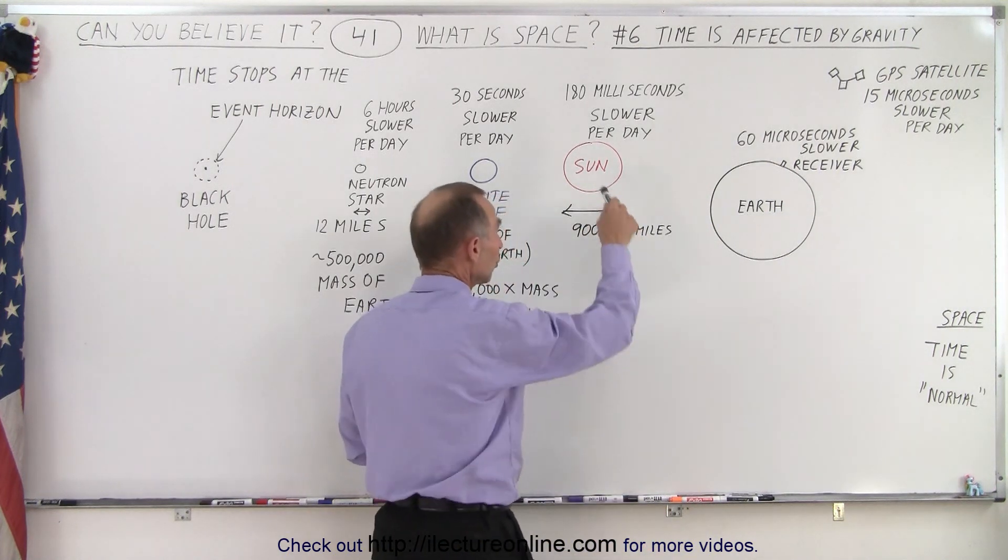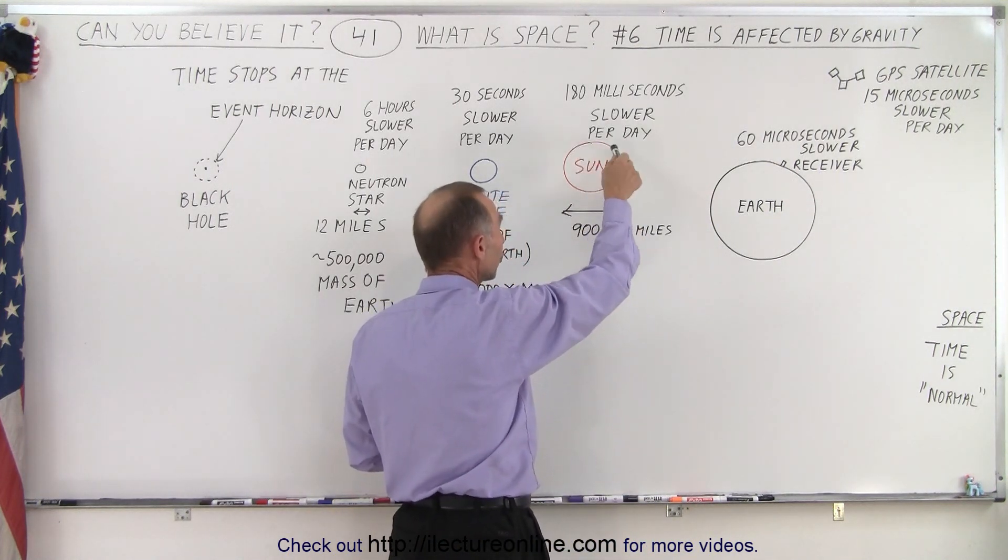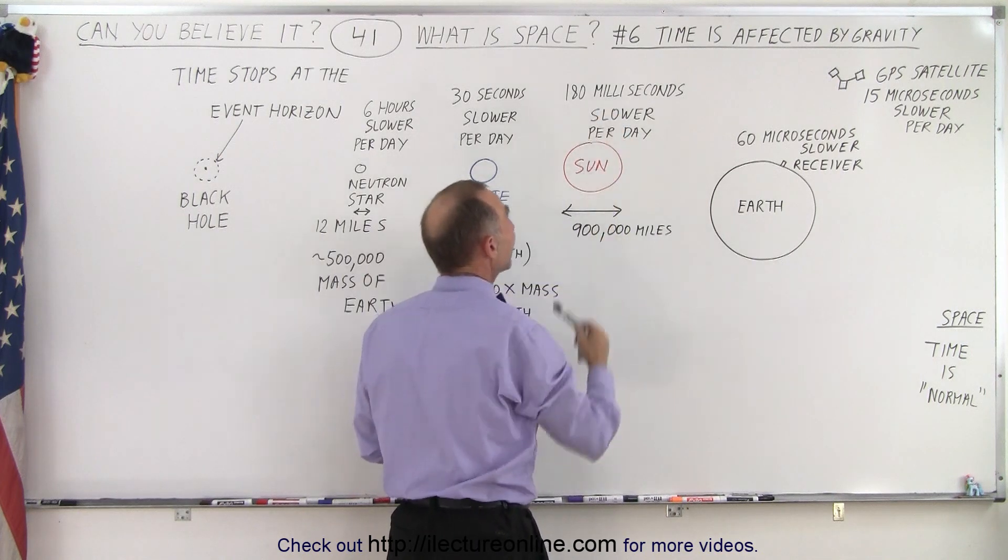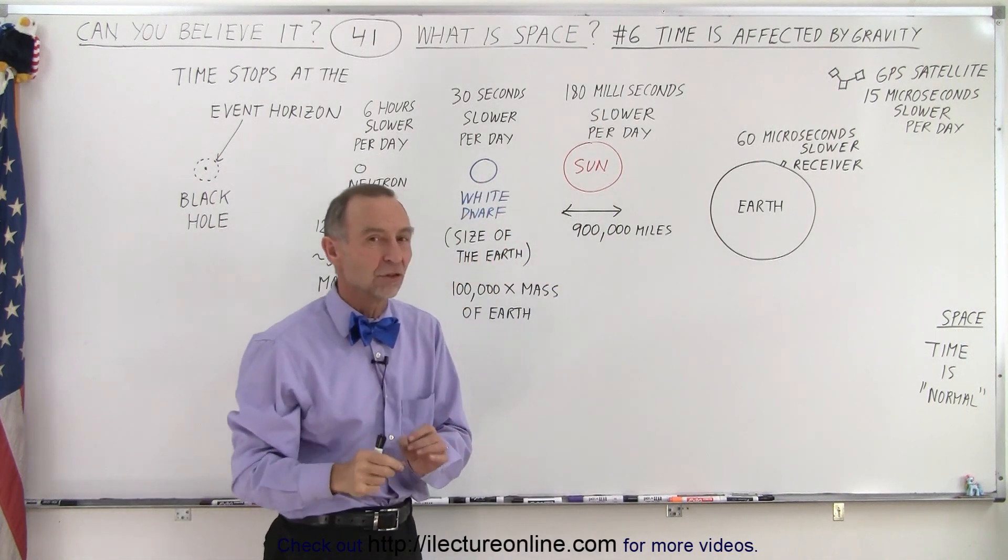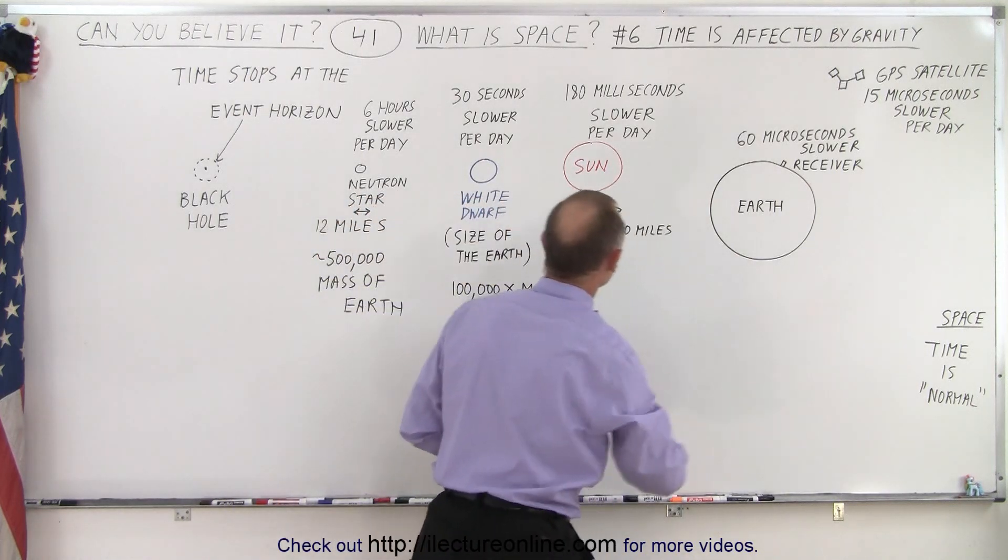If we then travel towards the Sun and we're able to get close to the surface of the Sun, their clocks would run 180 milliseconds slower than they would if they were far away in space.